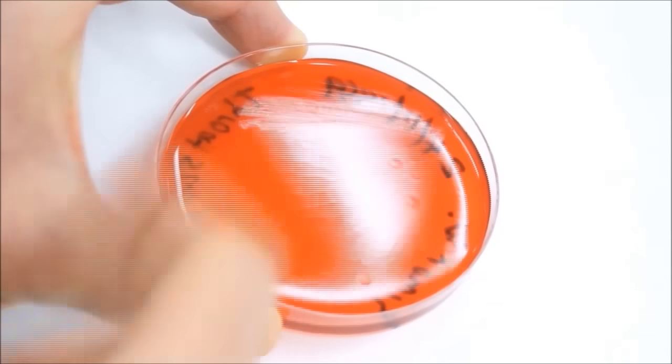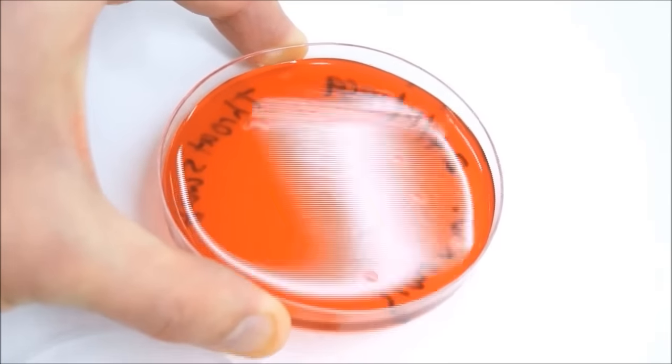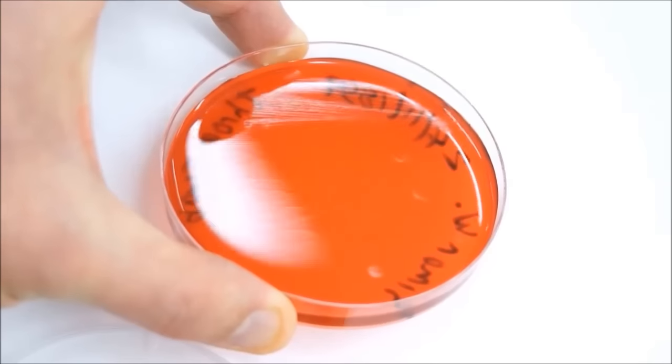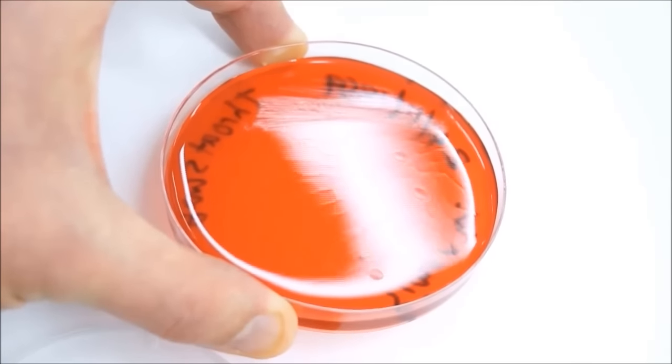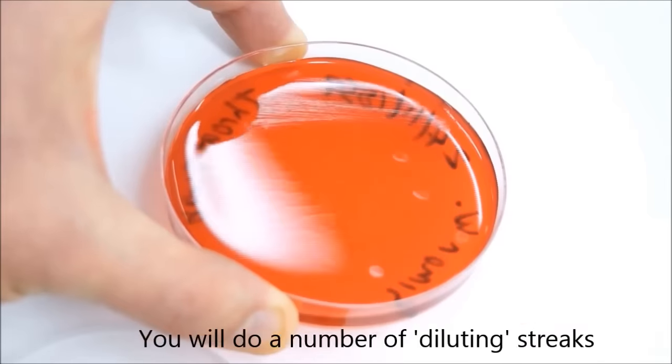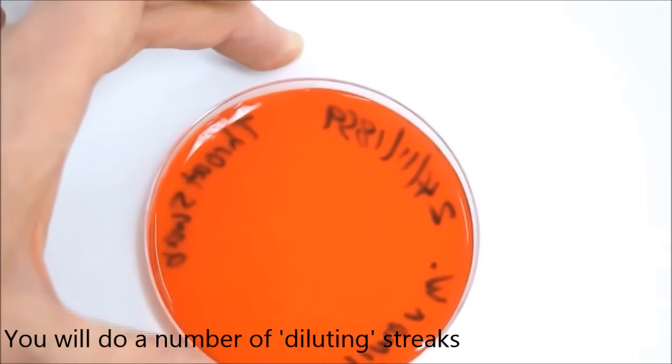But this is what it looks like. You should be able to see streaks along that edge of the plate. That's going to result in confluent growth. There are way too many bacteria there to pick individual colonies. So what we're going to do now is a series of streaks to dilute that confluent bacterial growth.